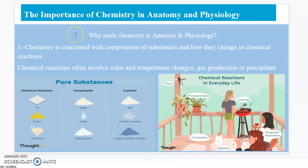The importance of chemistry in anatomy and physiology. Why study chemistry in anatomy and physiology? One of the reasons is because chemistry is concerned with composition of substances and how they change in chemical reactions. Chemical reactions often involve colors and temperature change, gas production, or precipitate. Without chemical reactions, we would have no life. Nobody would not exist.